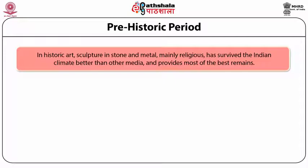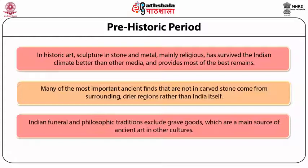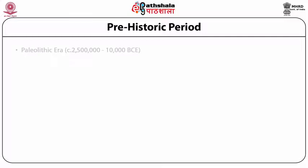In historic art, sculptures in stone and metal, mainly religious, have survived the Indian climate better than other media and provide most of the best remains. Many important ancient finds not in carved stone come from surrounding regions rather than India itself. Indian funeral and philosophic traditions exclude grave goods, which are a main source of ancient art in other cultures.